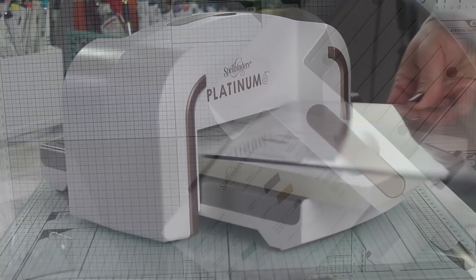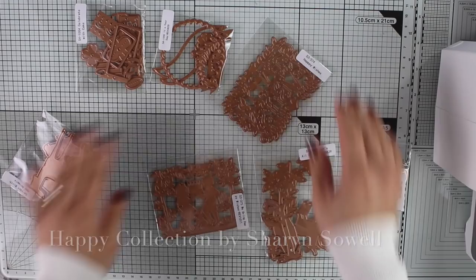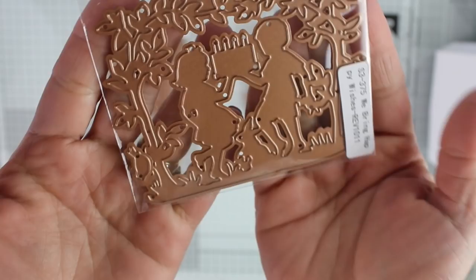I also have here the Spellbinders happy collection by Charin Soel and there are seven die sets in this collection and all of them are going to cut silhouettes, children, animals, little plants and sentiments. Just beautiful.